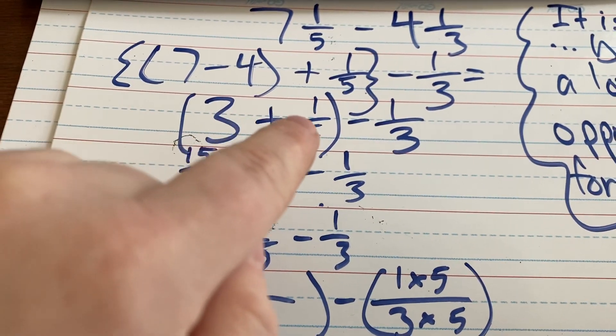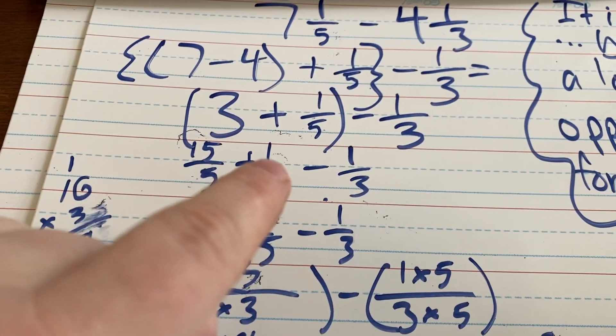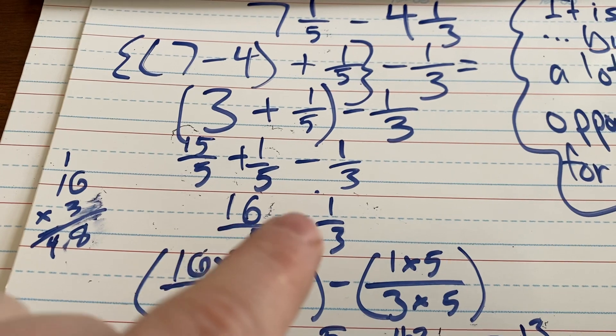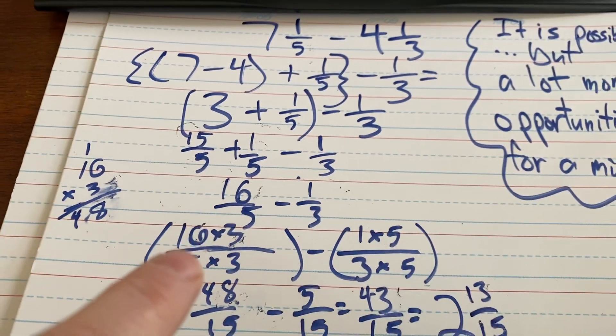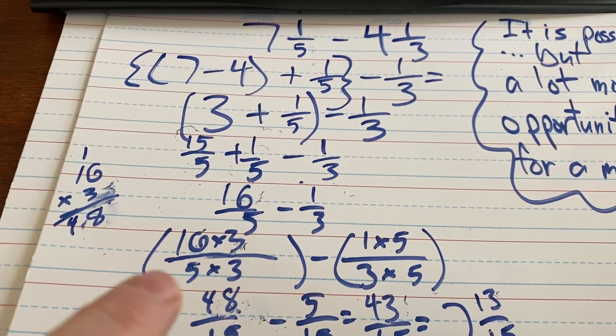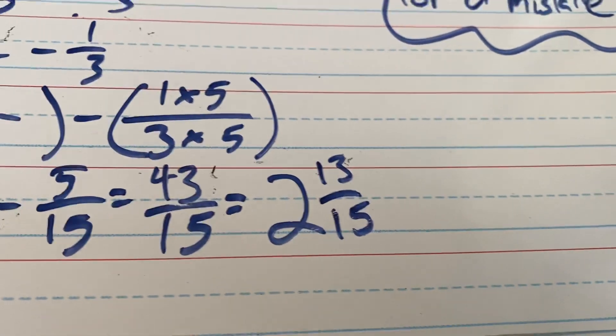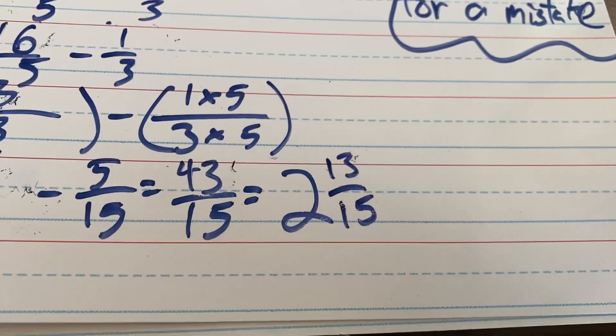So, you'd have to figure out what is 3 plus 1/5. 15/5 plus 1/5, then minus the 1/3. And here's where we're at. 16/5 minus 1/3. Find your common denominator of 15, multiply and rewrite your fractions, and you are left with the correct answer, 2 and 13/15.